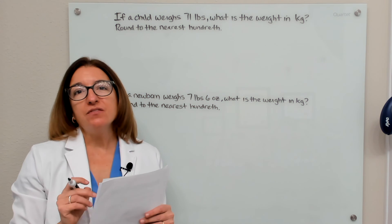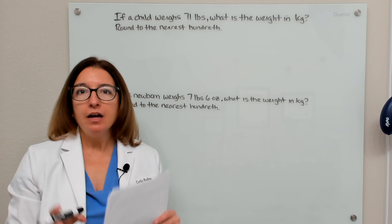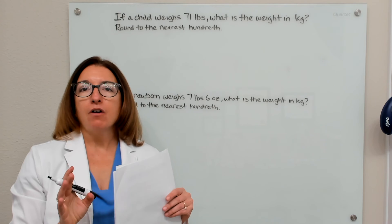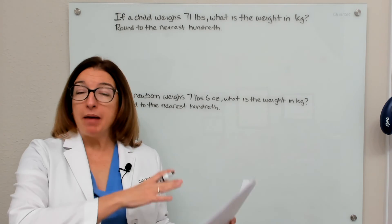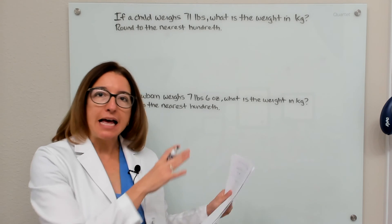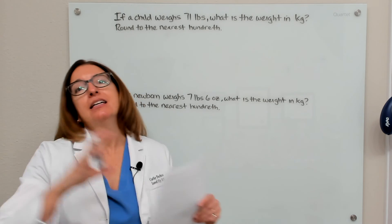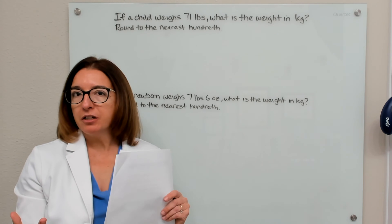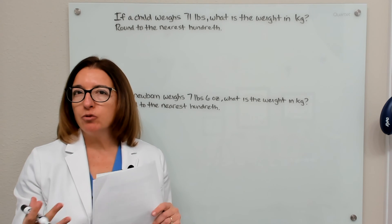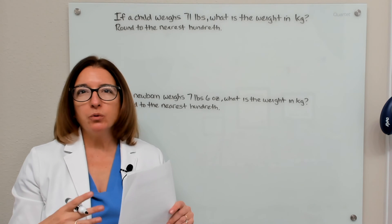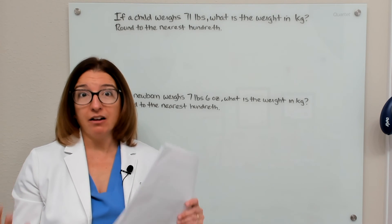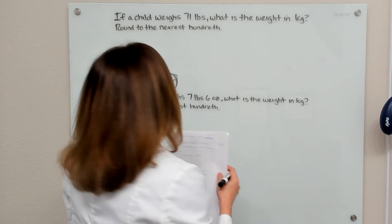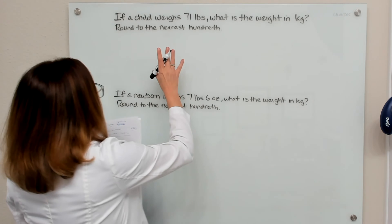In this video, we are going to review how to convert a child's weight from pounds to kilograms, or pounds and ounces to kilograms. With the pediatric population, we typically need to round to at least the nearest hundredth when it comes to their weight. Let's look at these two examples.